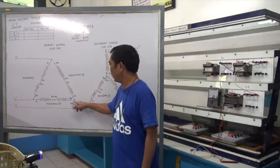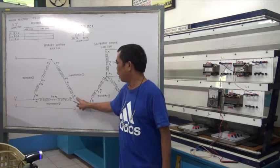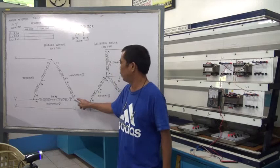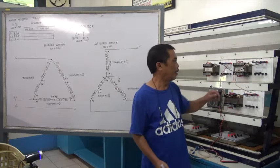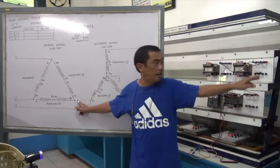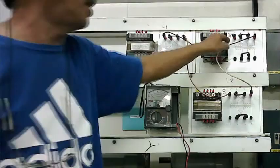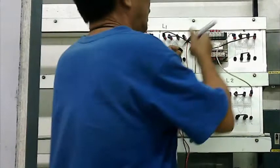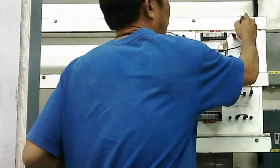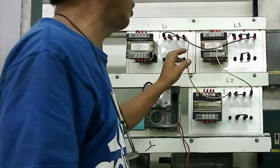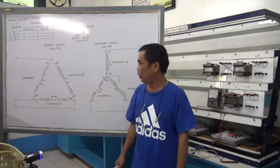And for Line 3, this is the combination of transformer two and transformer three — H1 and H4 — and we label this as Line 3. This is now the connection of our transformer in delta.